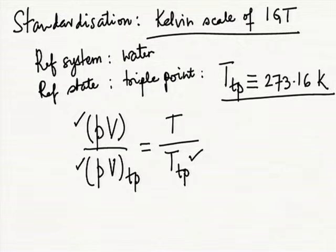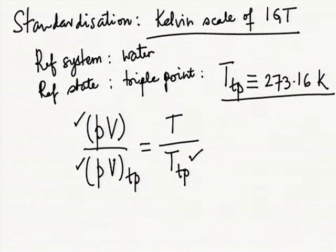To measure the temperature of a system, take your ideal gas system, bring it in thermal contact with the system, adjust pressure and volume until thermal equilibrium is established, then find the PV product. You have already determined PV at the triple point by creating a system with water at the triple point. T_triple is defined, so you compute temperature T. This was the method for determining temperature on the ideal gas Kelvin scale.